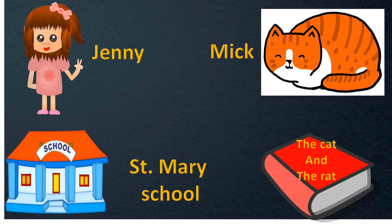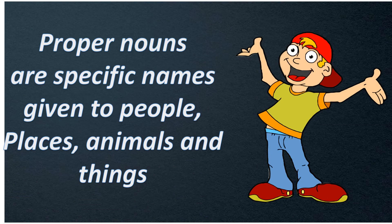And I have given one name to the book also. The name of the storybook is 'The Cat and the Rat.' If I ask you to go and get the book, you will be confused. But if I say go and get 'The Cat and the Rat' book, it is very specific and you will go and get that book. So here, we have given specific names to the person, place, animal and things. Proper nouns are specific names given to people, places, animals and things.